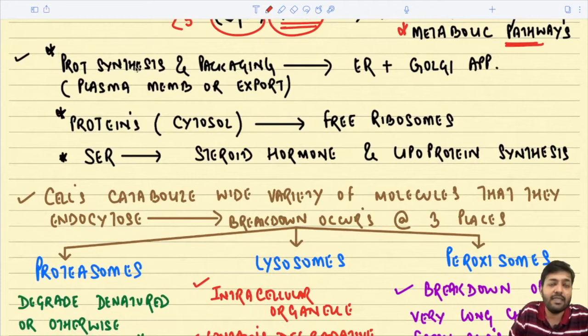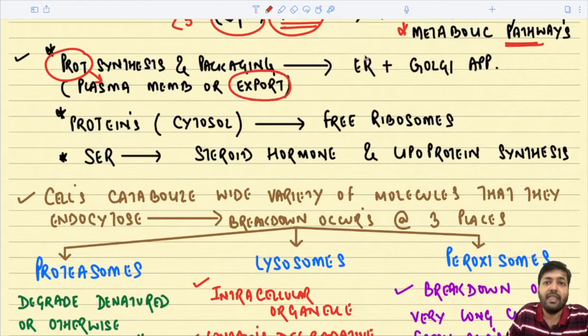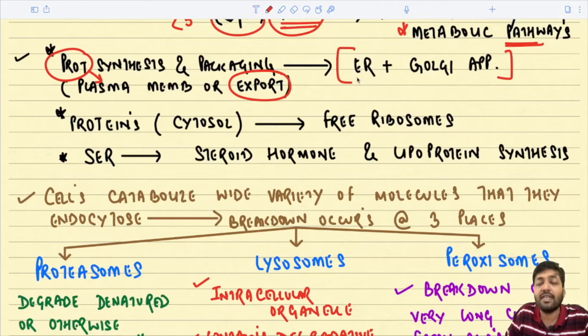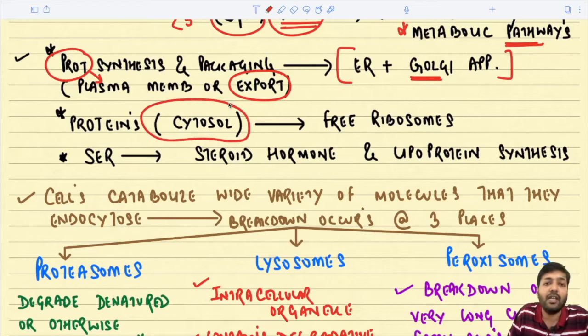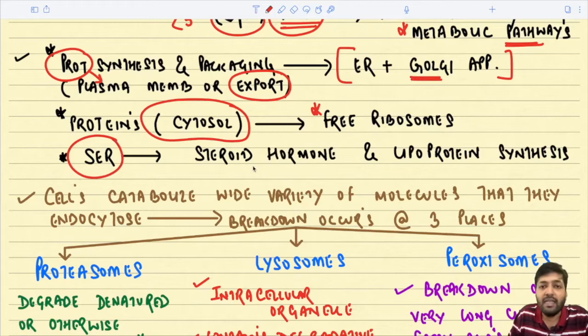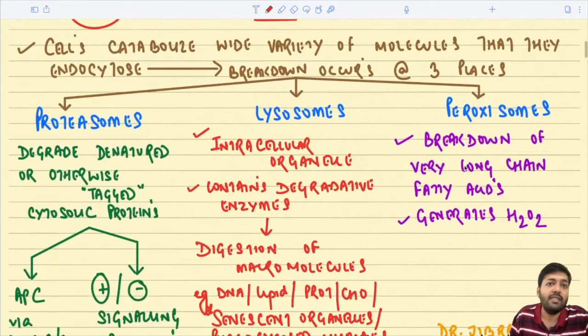Regarding protein synthesis and packaging: proteins destined to bind the plasma membrane or be exported outside the cell are synthesized and packaged in the endoplasmic reticulum and Golgi apparatus. Proteins meant to remain in the cytoplasm are synthesized by free ribosomes. The smooth endoplasmic reticulum is mainly responsible for steroid hormone synthesis and lipoprotein synthesis.